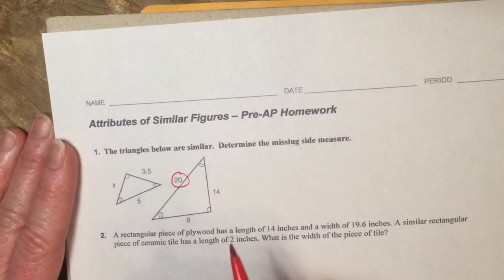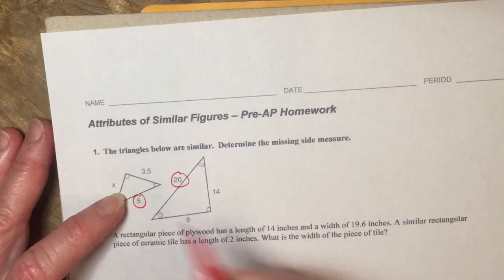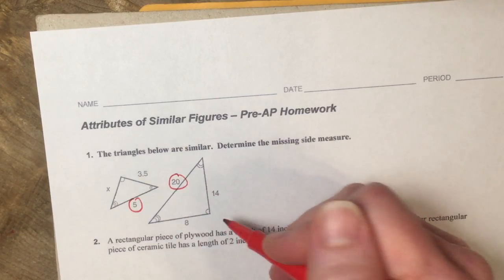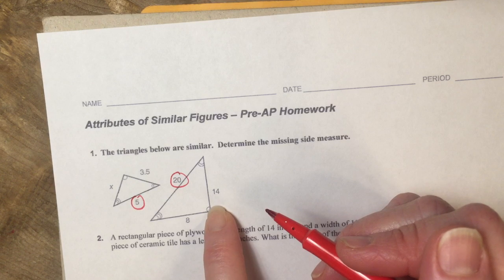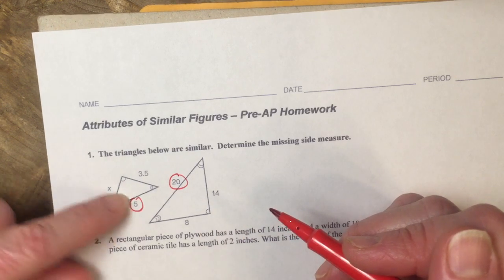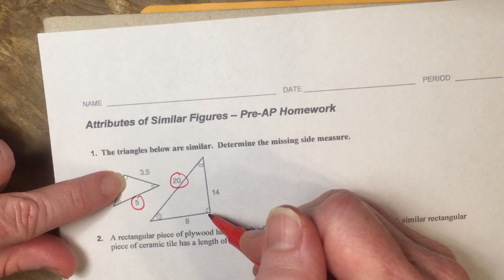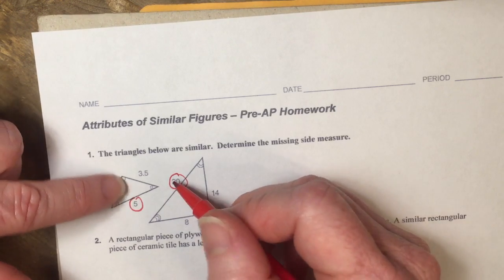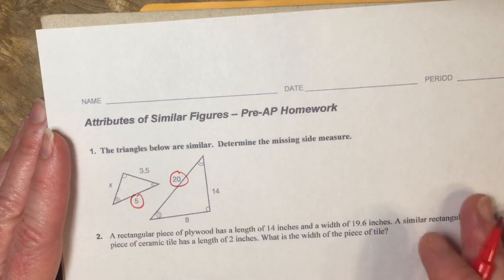So I'm going to use the 20, and it's corresponding to the 5, and I can know that for sure because corresponding sides are across from their angles. I can see that this angle right here, because it has one arch, and this one here has one arch, that these sides and that these angles are the same. So across from those angles are going to be my corresponding sides.